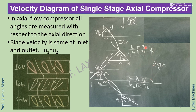H01, P01, and T01 are the total values — enthalpy, pressure, and temperature — at the inlet, while H02, P02, and T02 are the total values at the exit of the compressor. In the Moving Blade, these are the static values at the inlet of the Moving Blade, and these are the static values at the exit of the Moving Blade, i.e., the Rotor Blade.